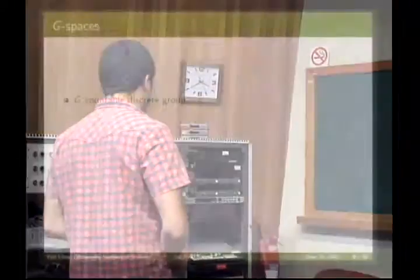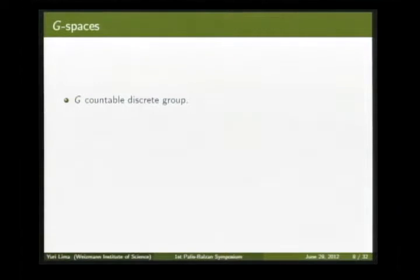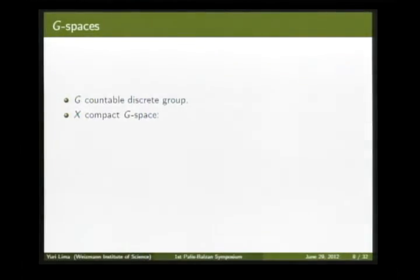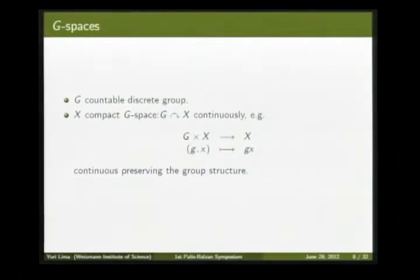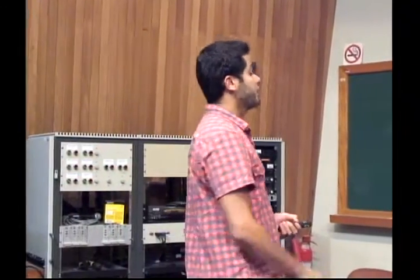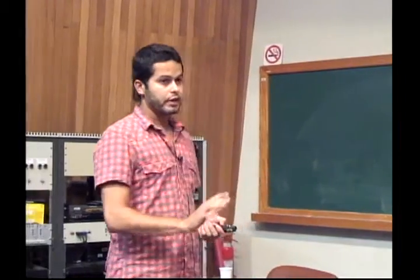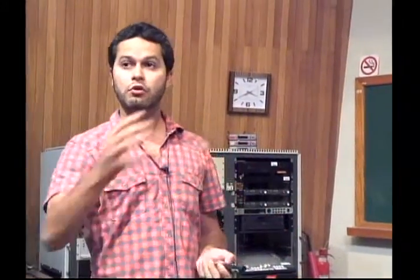It's a group action, so let's say what is a G-space and how does a group act on a space. In this talk, G is always going to be a countable discrete group — think for example of the free group with two generators. We consider a compact metric space X and say that X is a G-space if G acts on the space continuously. In other words, we have a map from G × X to X that preserves the group structure of G, in the sense that g·(h·x) = (gh)·x.